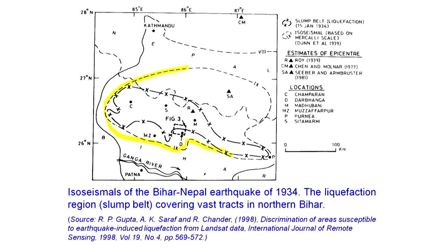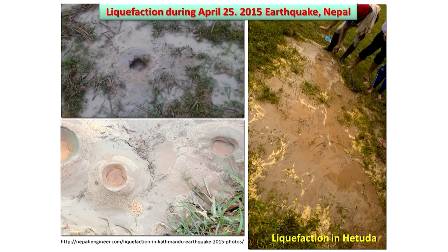The mapped area was compared with the iso-seismal zones to see exactly where things occurred. In liquefaction events like the Nepal earthquake, sand volcanoes appear where sand and water come out of the ground, and some water bodies may also appear because of liquefaction. These observations were also made during the April 25th 2015 Nepal earthquake.